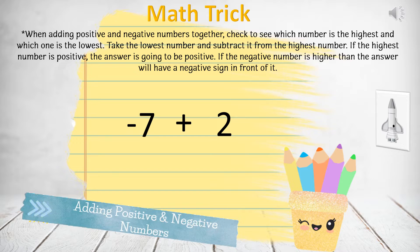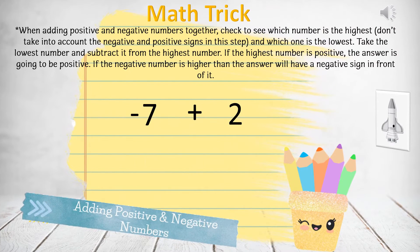For example, let's try it on the equation below: negative 7 plus 2. Let's see which one is the highest and which one is the lowest. Now for this step, we don't take into account the negative or positive signs in front of the number. It may sound confusing, but please keep watching and hopefully it becomes easier to understand.